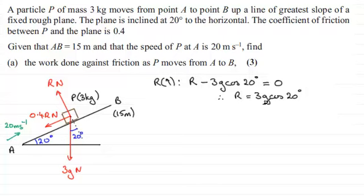And if you work this out, taking G to be 9.8, you end up with R equaling 27.626 and so on. And that would be measured then in newtons.